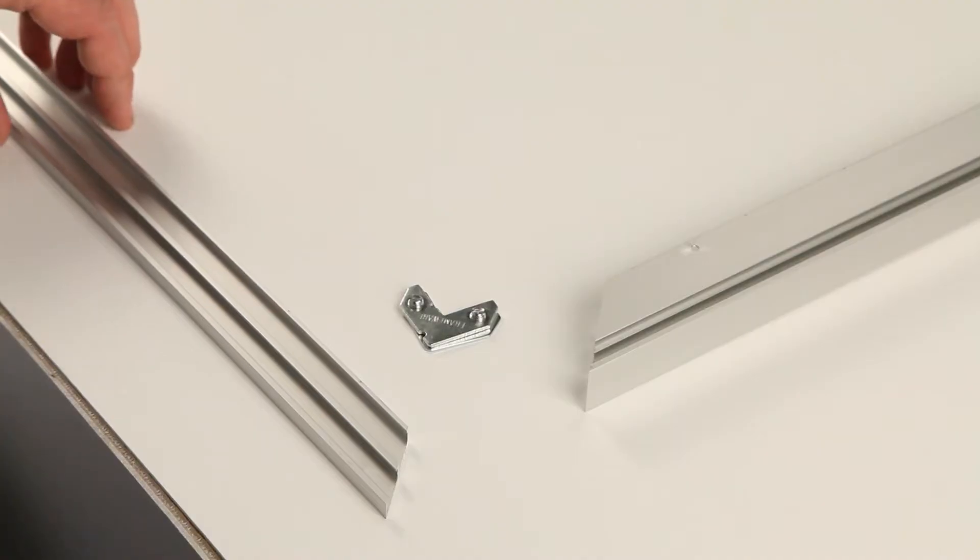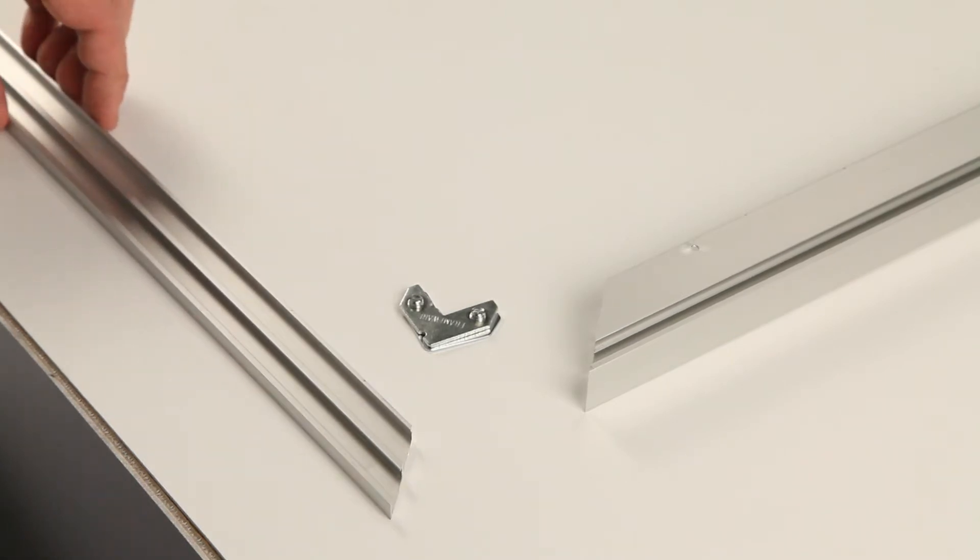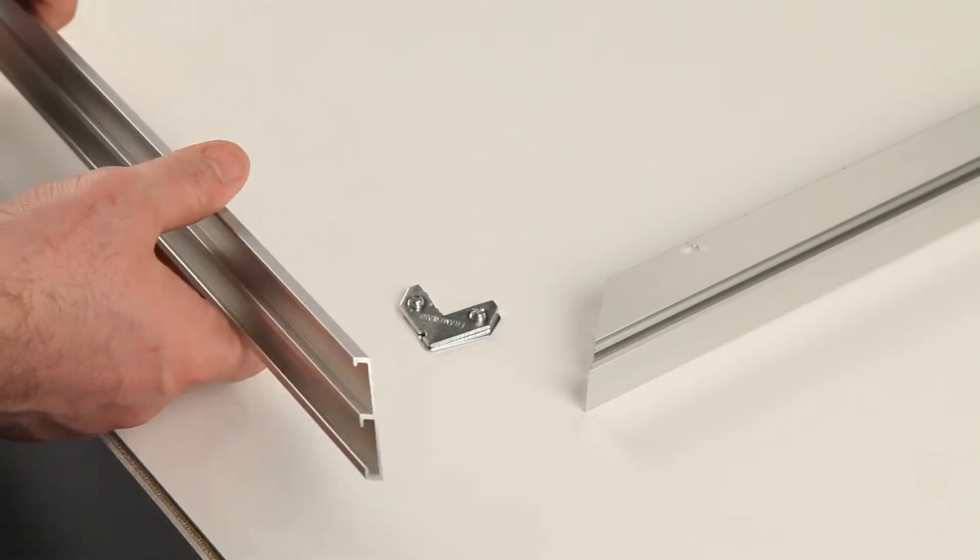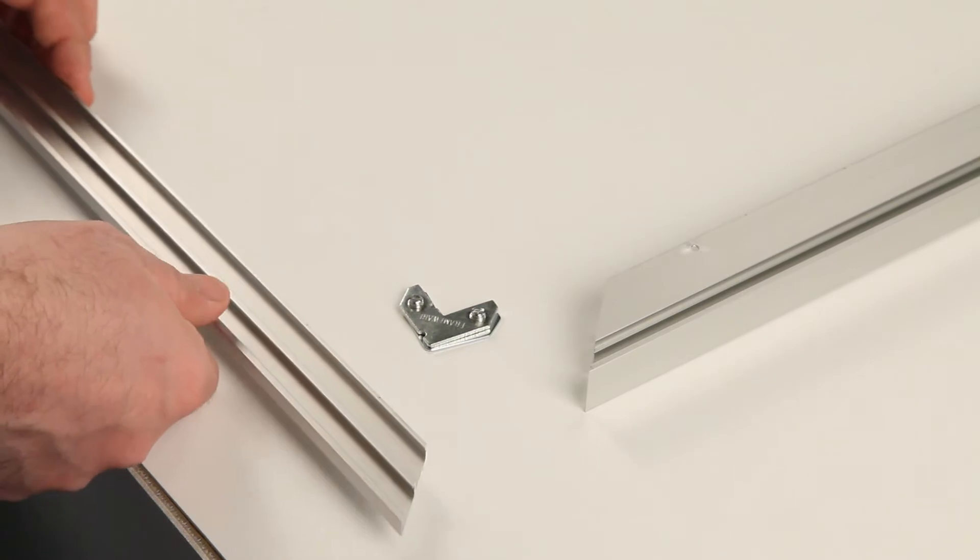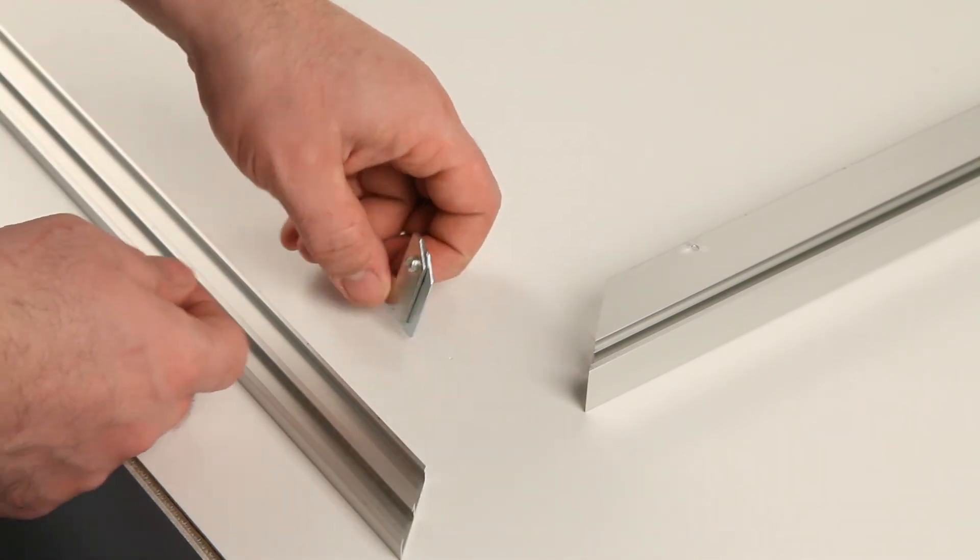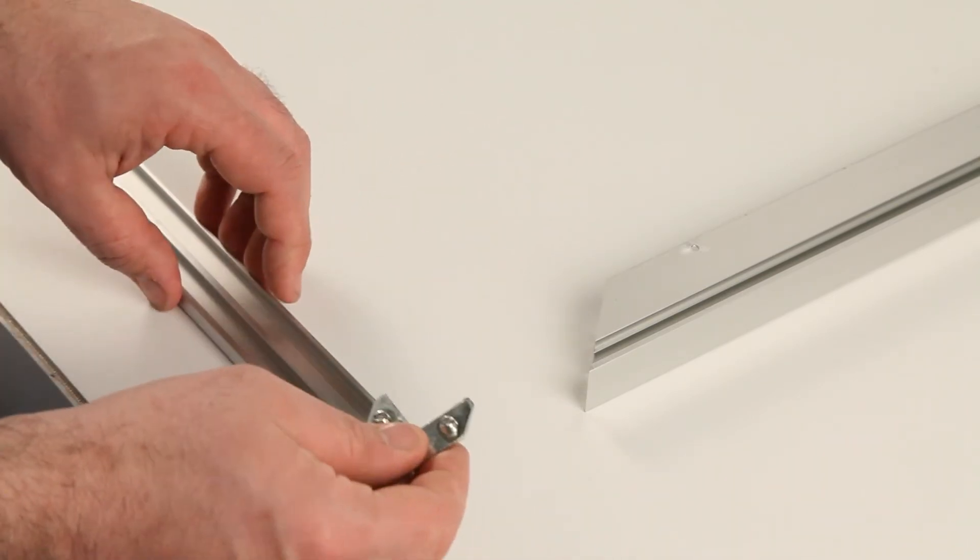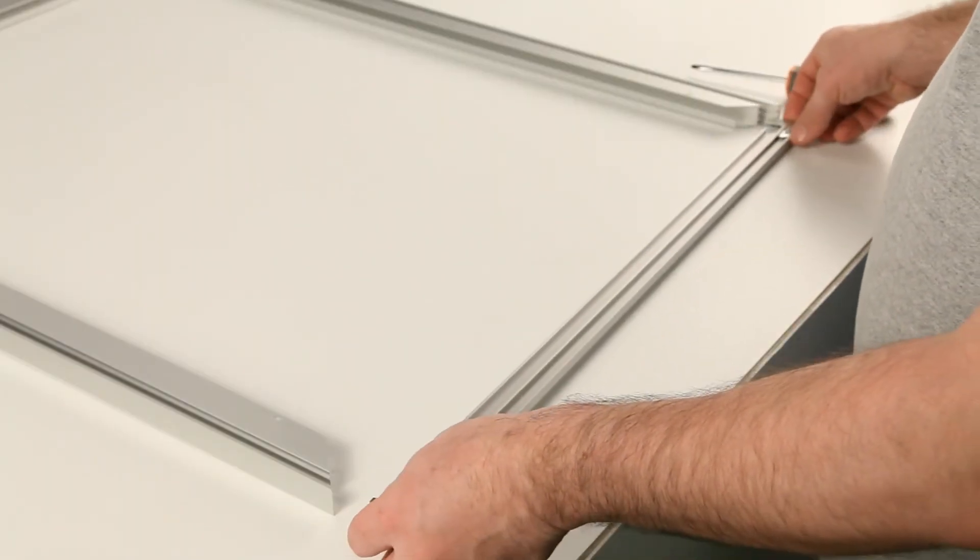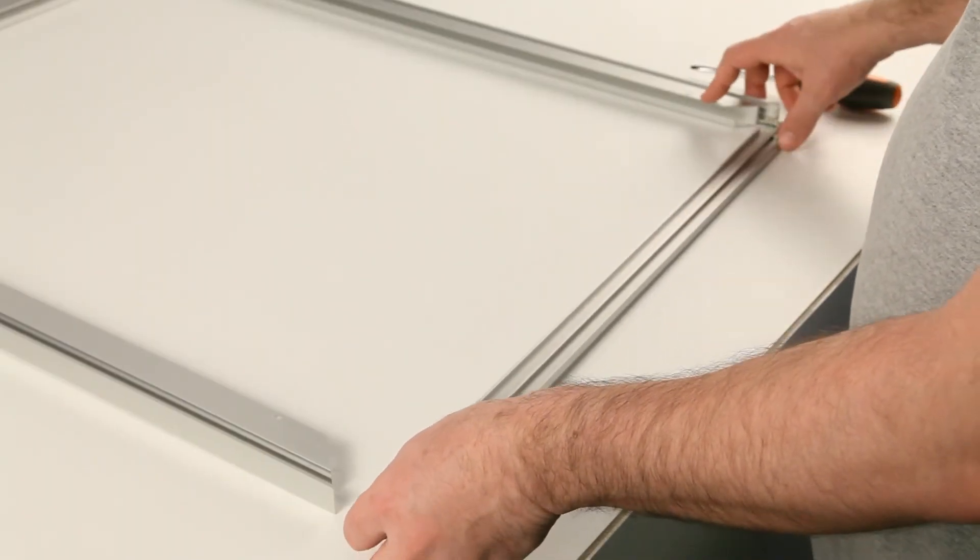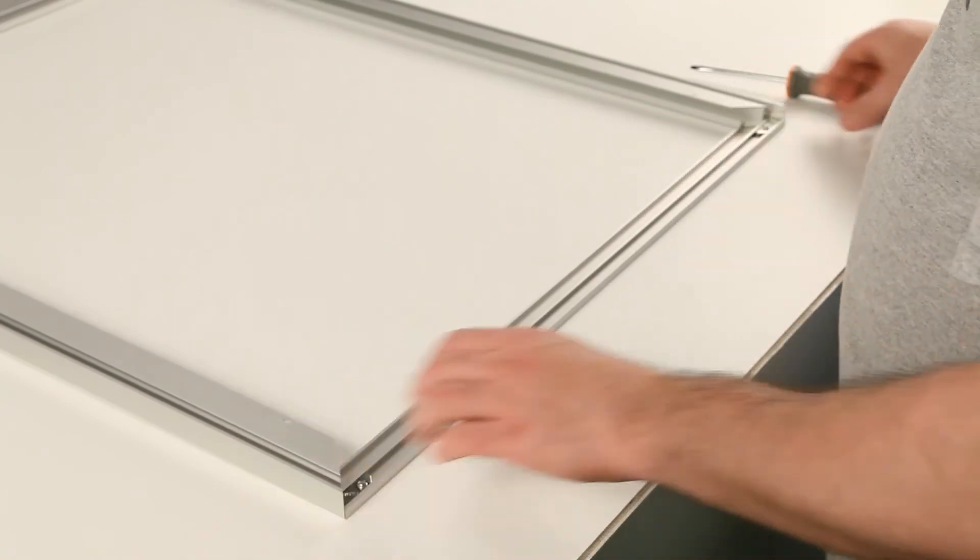You'll notice that one of the Euro-style slide-in frame rails is different from the others. This rail is thinner, so when the frame is assembled, it creates a slot opening and room for your graphic and materials to slide in. So connect the three larger frame rails first, then the thin rail, like so.